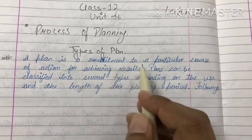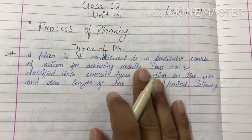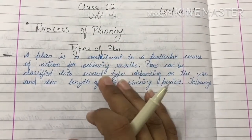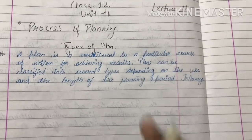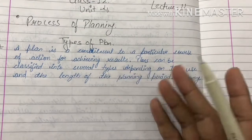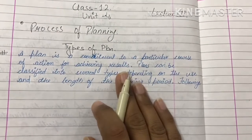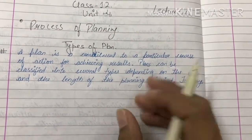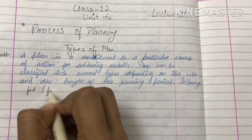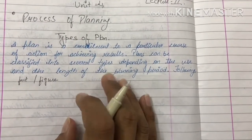A plan is a commitment to a particular course of action for achieving results. Planning एक specific action होता है, जिसको हम propose करते हैं, ताकि हम organization के objectives को achieve कर सकें. ये एक document होता है जिसमें हम अपने goals और achievements लिखके रखते हैं. More importantly, ये एक तरीकी का evidence होता है, एक proof होता है, जिसमें हम अपने सारे facts, figures, और data लिखके रखते हैं, so that in future we can get help through it.